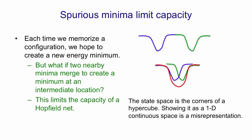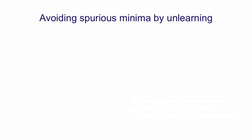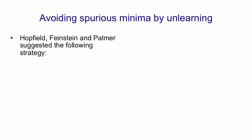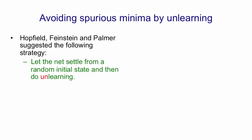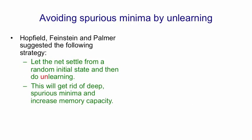One thing I should mention is this picture is a big misrepresentation. The states of a Hopfield net are really the corners of a hypercube, and it's not very good to show the corners of a hypercube as if they were a continuous one-dimensional horizontal space. One very interesting idea that came out of thinking about how to improve the capacity of a Hopfield net is the idea of unlearning. You let the net settle from a random initial state and then do unlearning — whatever binary state it settles to, you apply the opposite of the storage rule. If you let the net settle at that red merged minimum and did some unlearning on it, you'd get back the two separate minima. So by getting rid of deep spurious minima we can actually increase the memory capacity.